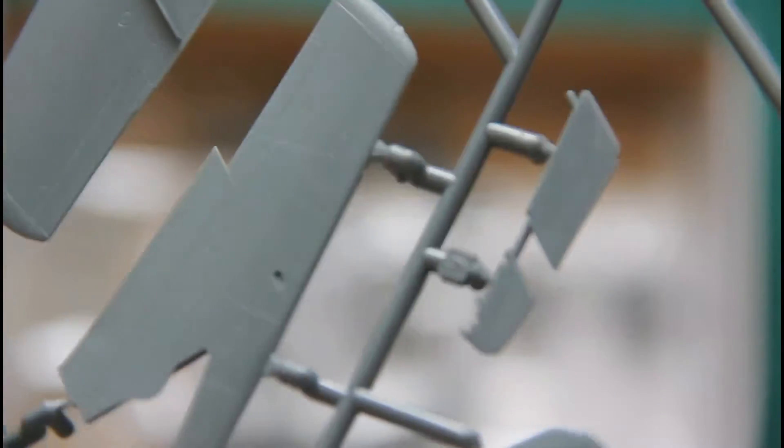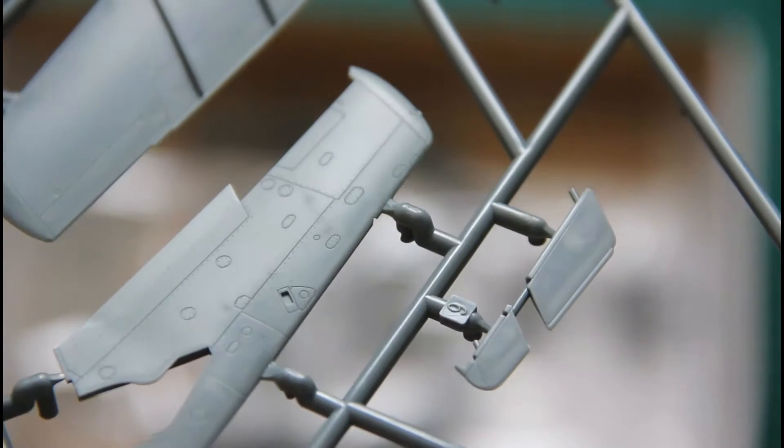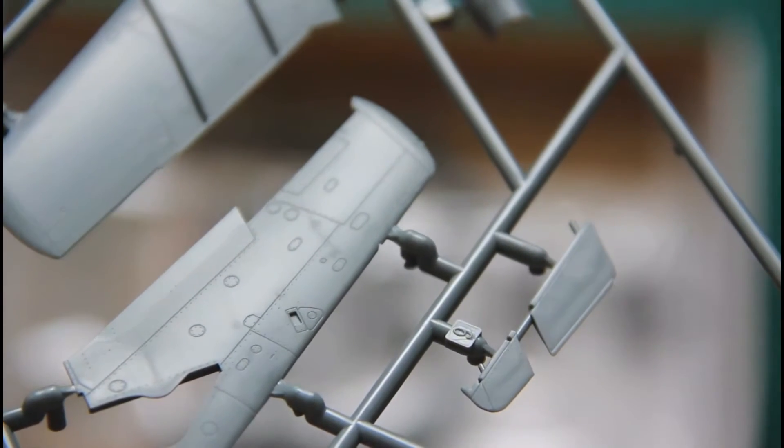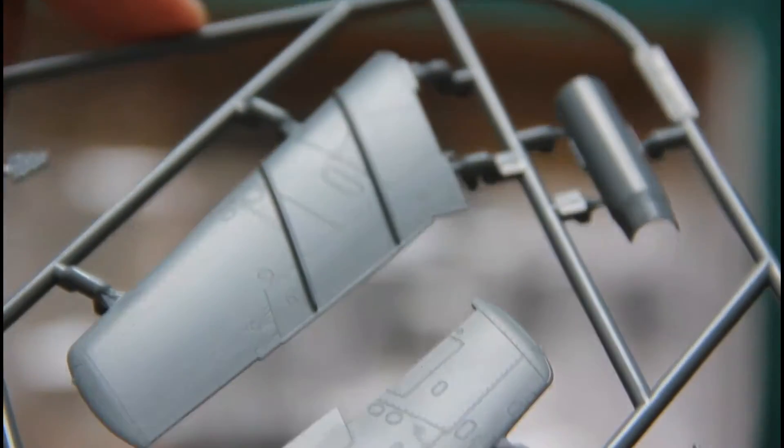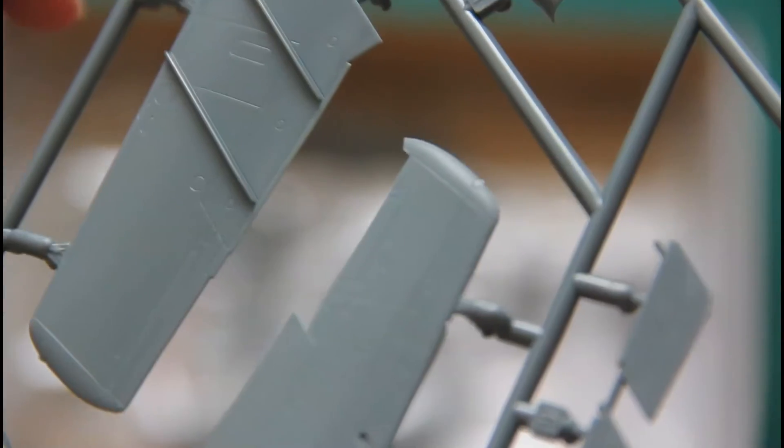Here is another sprue, this time we have wing parts. As you can see we have recessed panel lines and riveting. Parts division is typical so we have top and bottom halves for each wing and I have to say that it's quite easy to fix the wings without the glue on the model.